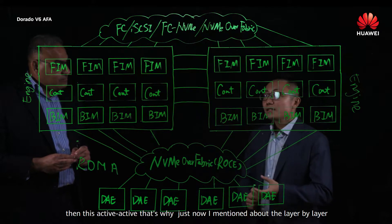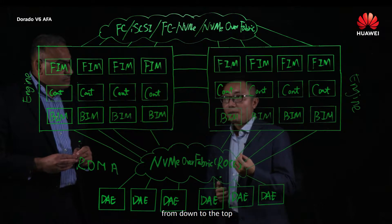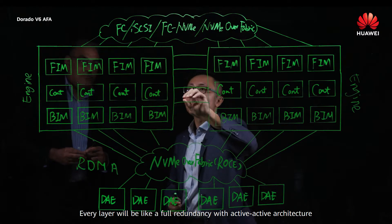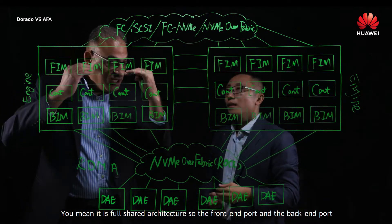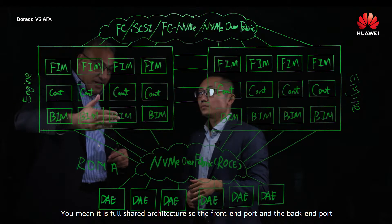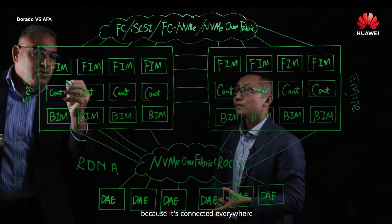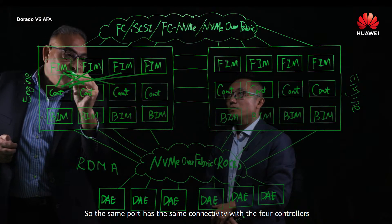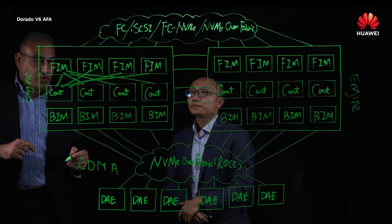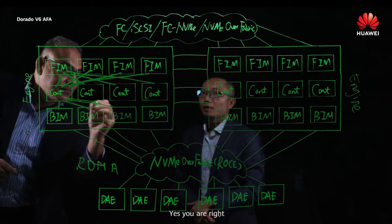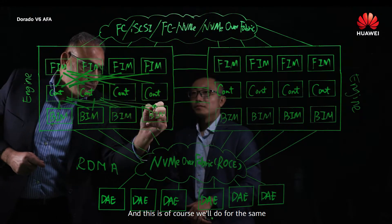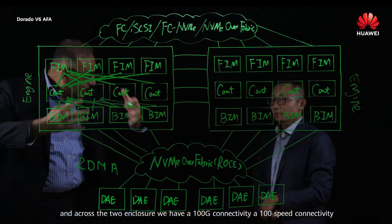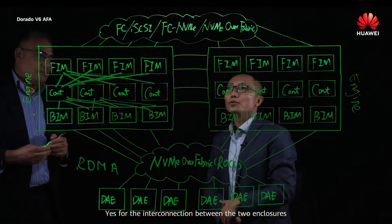In terms of active-active, this is why I mentioned layer-by-layer: you can see this architecture from bottom to top — every layer has full redundancy with active-active. It's a full shared architecture, so the front-end board and back-end board, everything is shared. The same port has the same connectivity with all four controllers, for both front-end and back-end. Across the two enclosures, we have 100G speed connectivity for the interconnection.